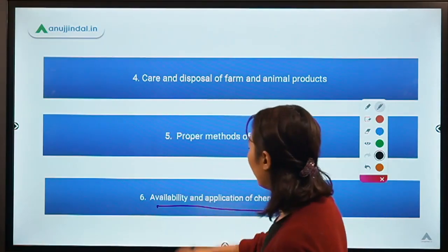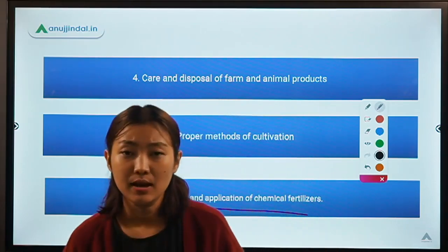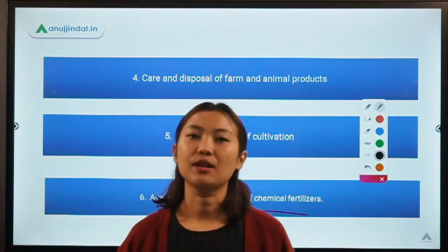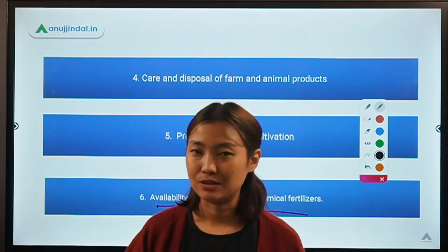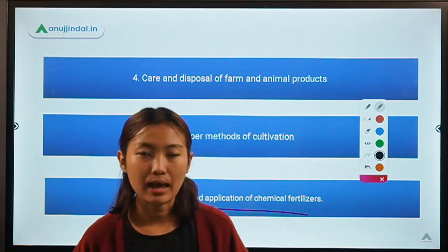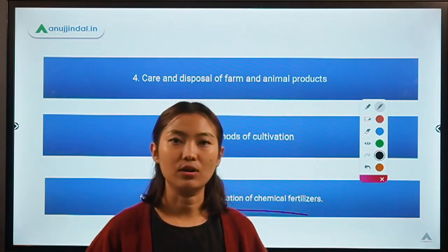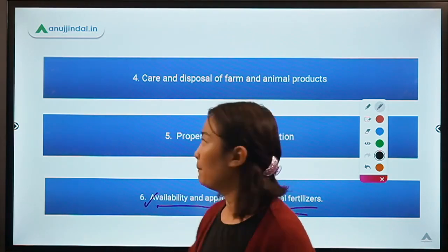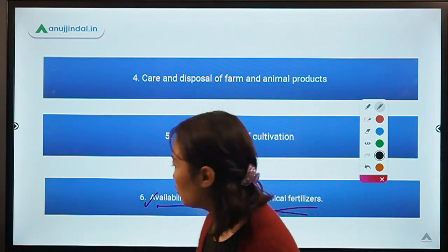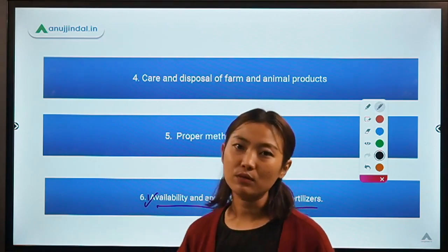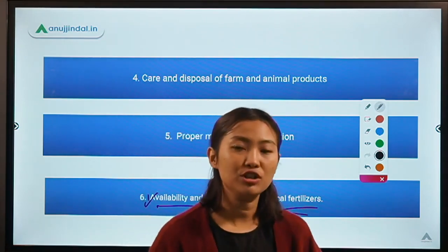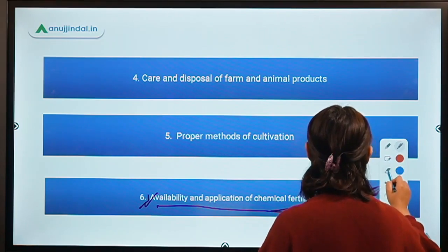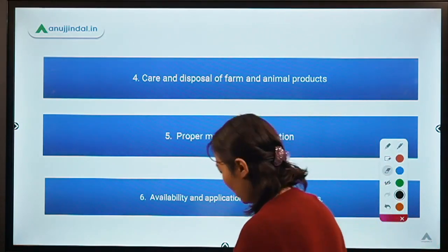The sixth point is the availability and application of chemical fertilizers. Due to the excess and improper application of chemical fertilizers, there are a lot of environmental problems — soil degradation, water pollution, and even hampered yields. But with the role of agronomy, we can identify and study the amount and the right method to apply fertilizers in a more precise way so that it doesn't harm the environment and it can help in better crop production.